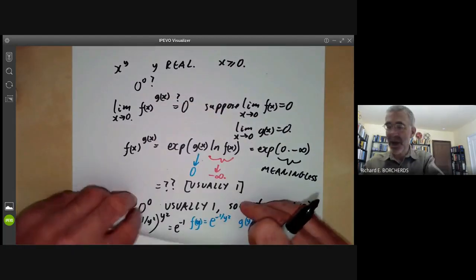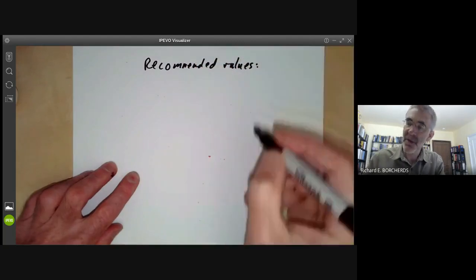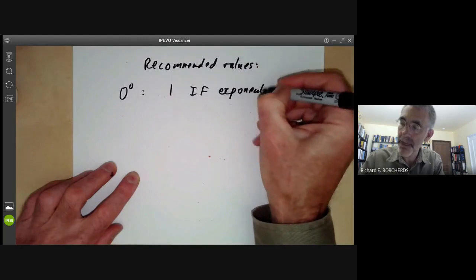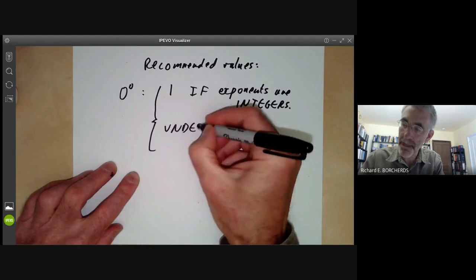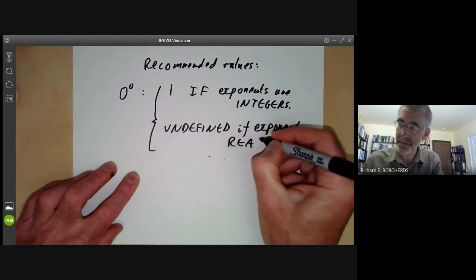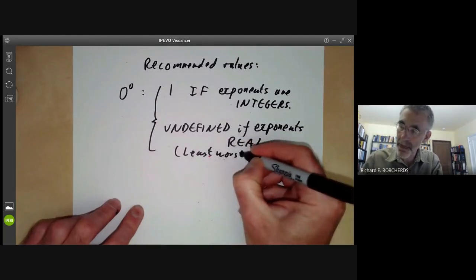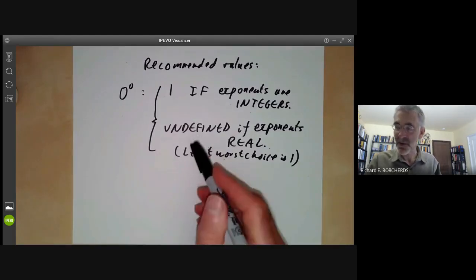To summarize: the recommended value for 0 to the 0 is 1 if the exponents are integers. If exponents are allowed to be real, then 0 to the 0 is undefined. If you absolutely have to define it when the exponents are real, the least-worst choice is 1 — but this is really not recommended. Defining 0 to the 0 to be 1 when the exponent is real is like cycling without a helmet: most of the time you'll get away with it, but every now and then if something goes wrong, you will really regret it.